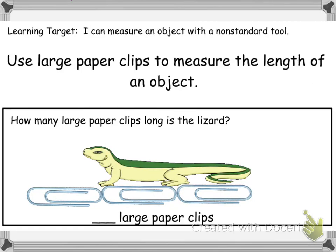Hi guys, Miss Davis here. Today we're talking about module 3, lesson 7. In this lesson we're talking about being able to measure objects with non-standard units, which means you're measuring something with something that is typically not used to find measurement. An example is paper clips — we're going to be using large paper clips and small paper clips to measure this lizard.